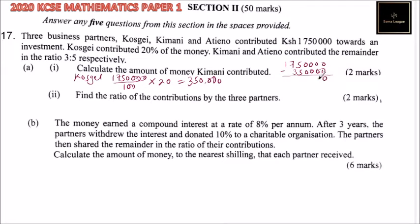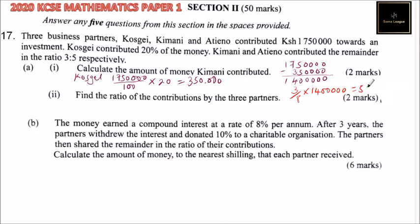When you subtract, you get 1,400,000. That is the amount that Kemani and Atieno contributed together. We are told Kemani and Atieno contributed in the ratio 3 to 5. So we calculate Kemani's share as 3 out of 8 — that is 3 plus 5 — multiplied by 1,400,000. Using your calculator, you find that Kemani contributed 525,000.